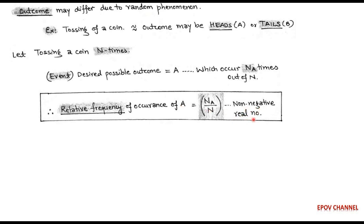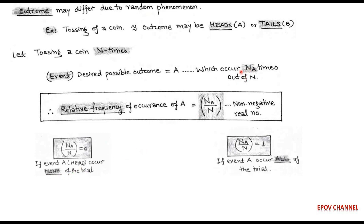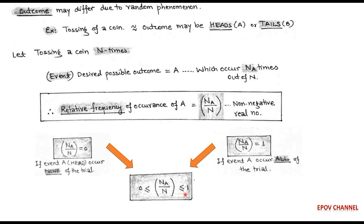This ratio Na/n is called the relative frequency of occurrence of event A, and it is a non-negative real number. If we assume event A (head) occurs in all n trials, then Na equals n and the relative frequency ratio equals 1. Similarly, if head A occurs none of the n trials, then Na equals 0 and the ratio Na/n becomes 0. This concludes that the relative frequency of occurrence of head A is greater than or equal to 0 but less than or equal to 1.